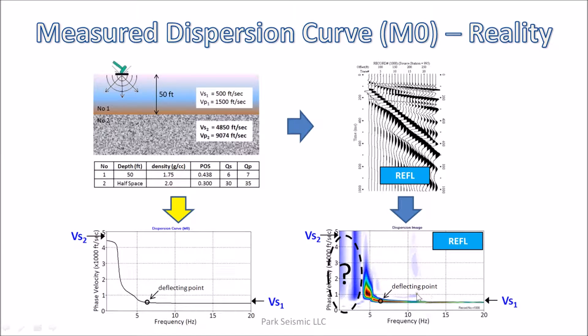This is the dispersion image generated from a 24-channel seismic record that was modeled from a layered earth model using the reflectivity modeling scheme. Both vertical seismic source and receivers were assumed during the modeling.